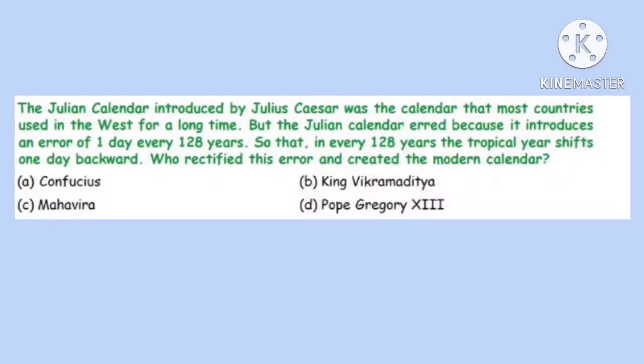Question 2. The Julian calendar introduced by Julius Caesar was the calendar that most countries used in the West for a long time, but it introduced an error of one day every 128 years, so that the tropical year shifts one day backward every 128 years. Who rectified this error and created the modern calendar? Correct option is D: Pope Gregory XIII.